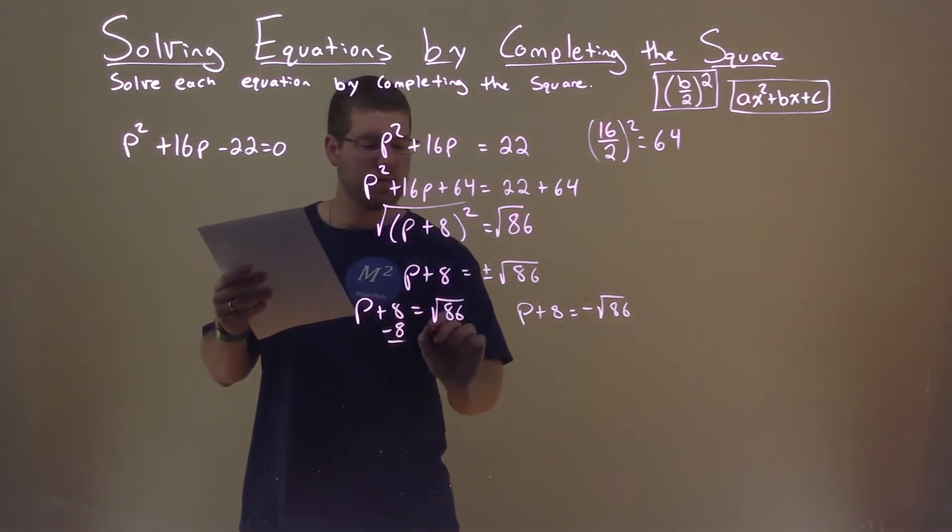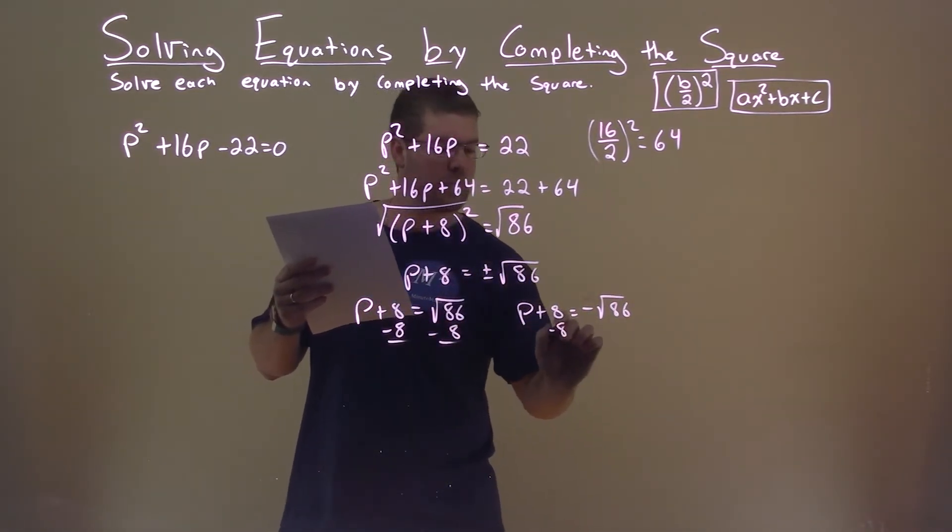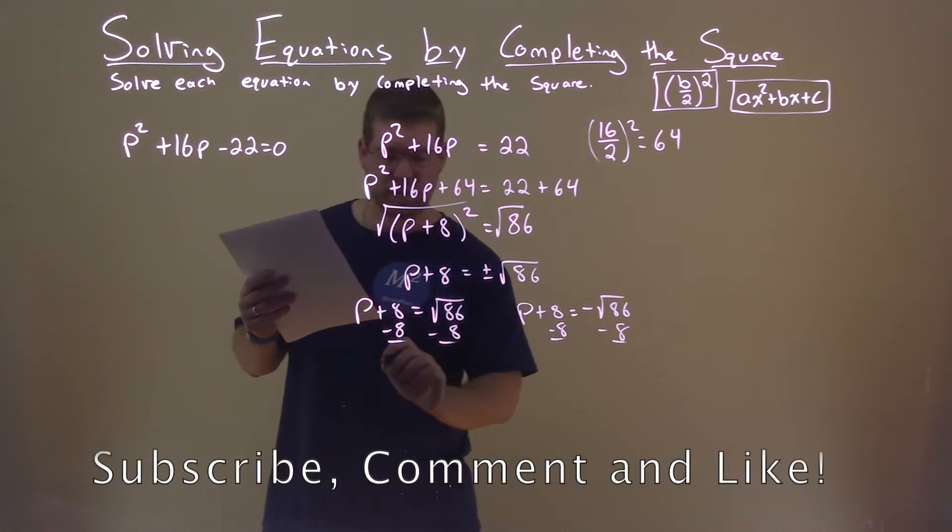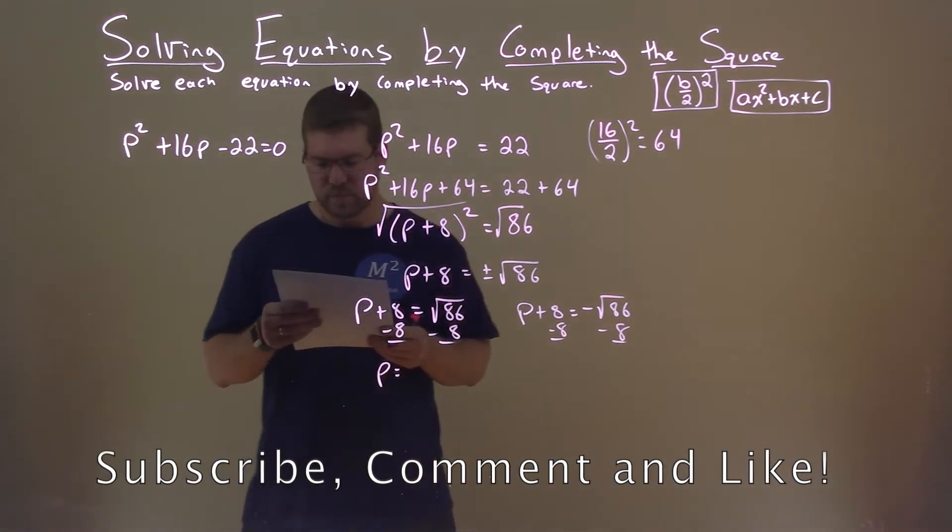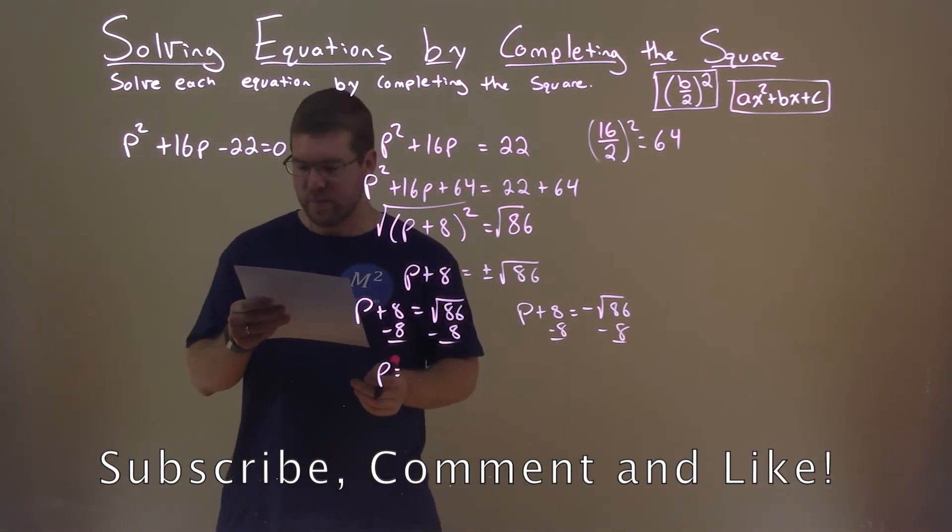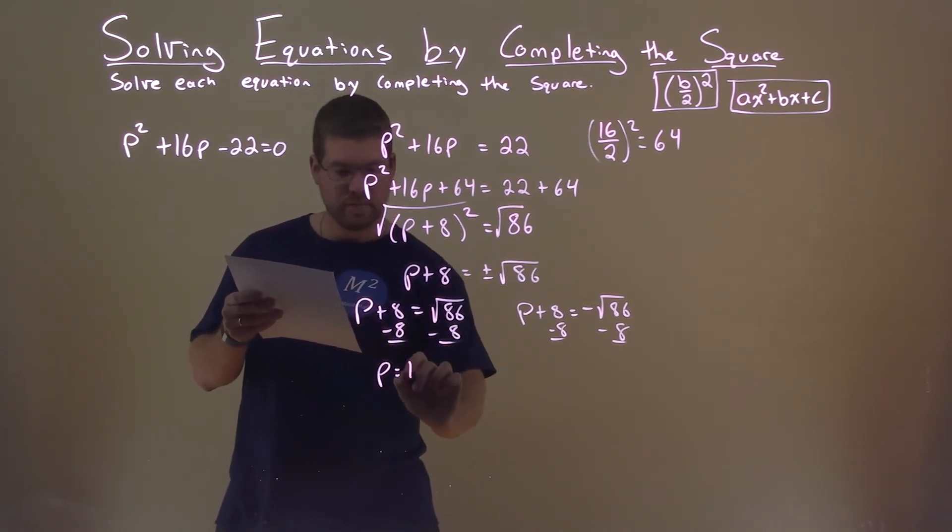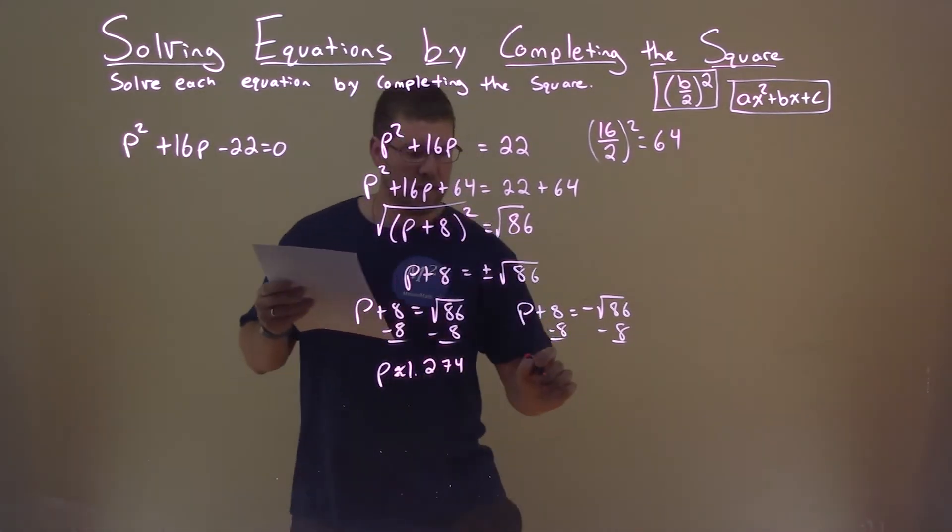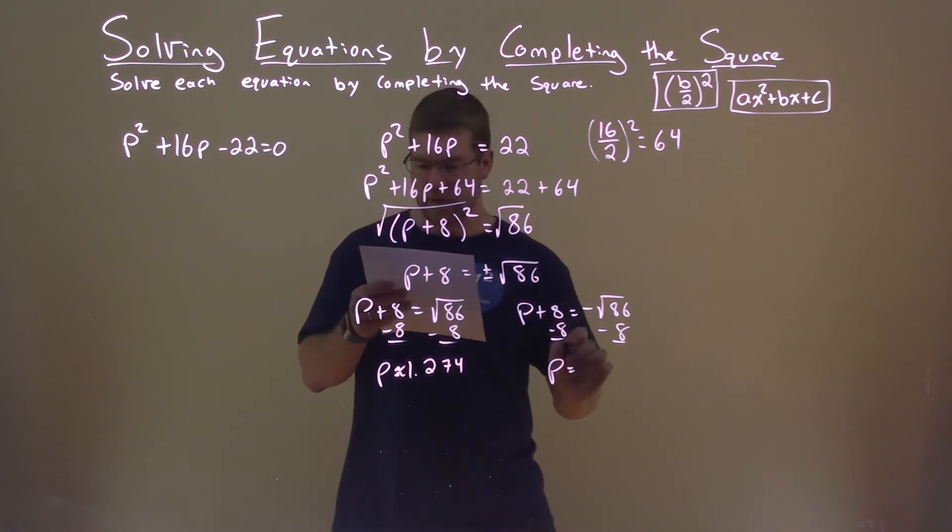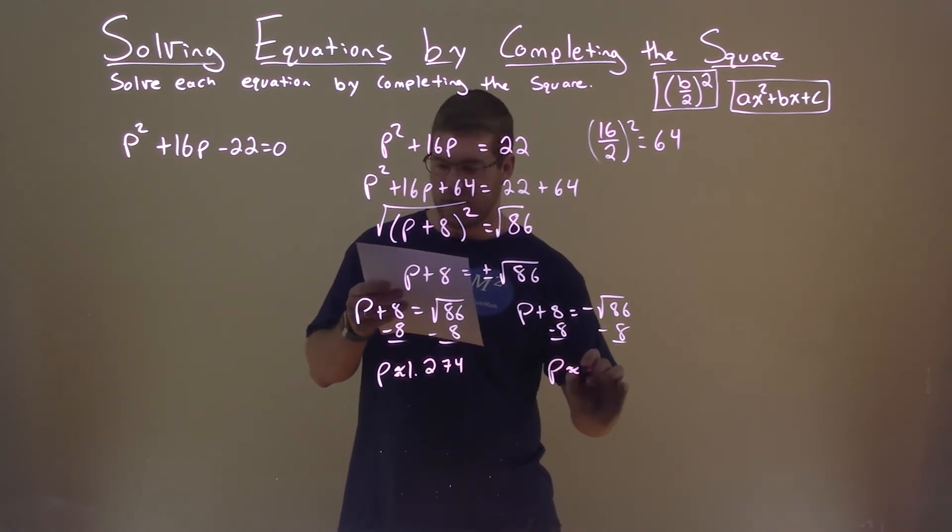Subtract the 8 to both sides for both equations, and what do we get? Well, in decimal form here, the square root of 86 minus 8 is a positive 1.274, approximately. And here, p equals a negative, or approximately a negative 17.274.